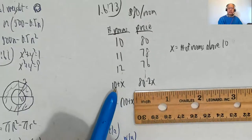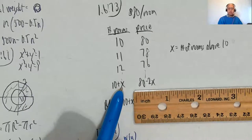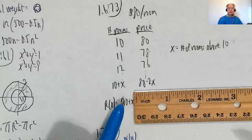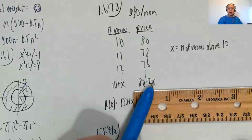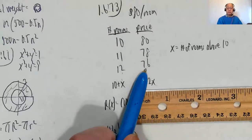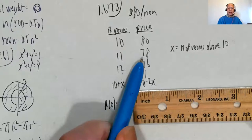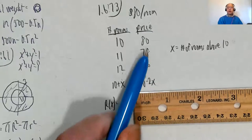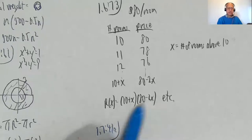So the number of rooms is 10 plus X, and the price per room is 80 minus 2X. We can double-check: if X equals 1, that's 11 rooms at $78; if X equals 2, that's 12 rooms at 80 minus 4 equals $76. So the revenue function R of X is (10 + X)(80 − 2X). The rest is just FOILing this out.